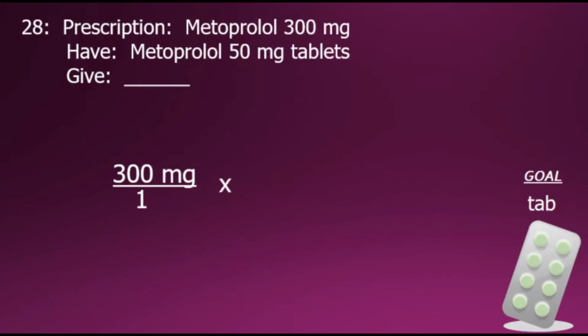We'll then multiply it by a conversion factor that changes milligrams into tablets. To eliminate milligrams, which are currently the unit for the order, we need to cancel milligrams out. To do so, we will put the milligram quantity in the denominator of our conversion factor.